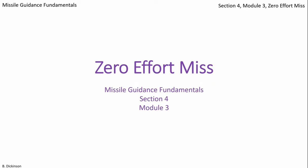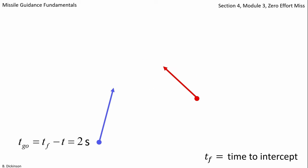Zero effort miss. Consider this pursuer and target initially on a collision course with a known time-to-intercept of two seconds. That means time to go is initially two seconds as shown.